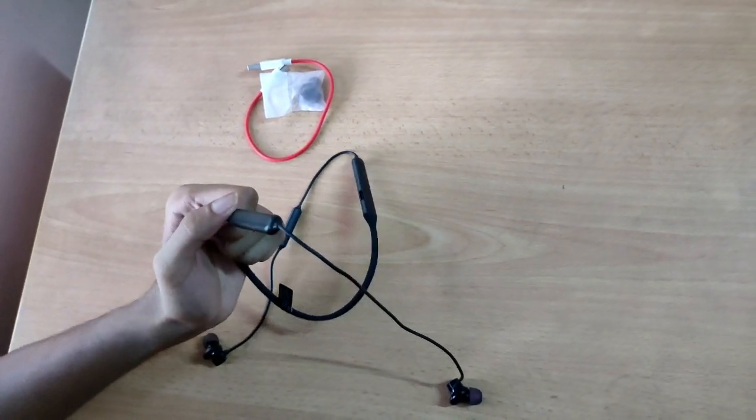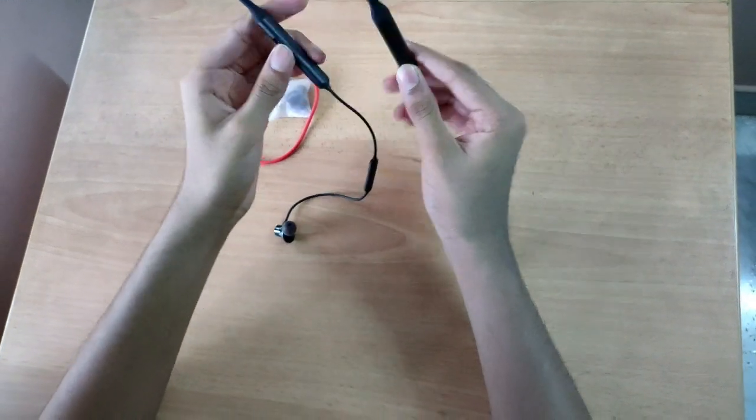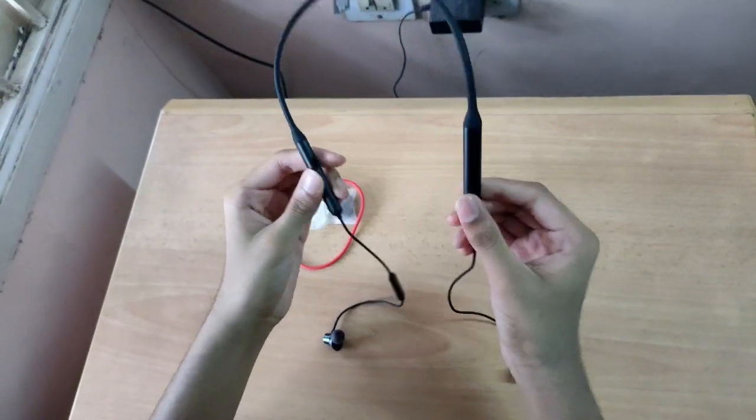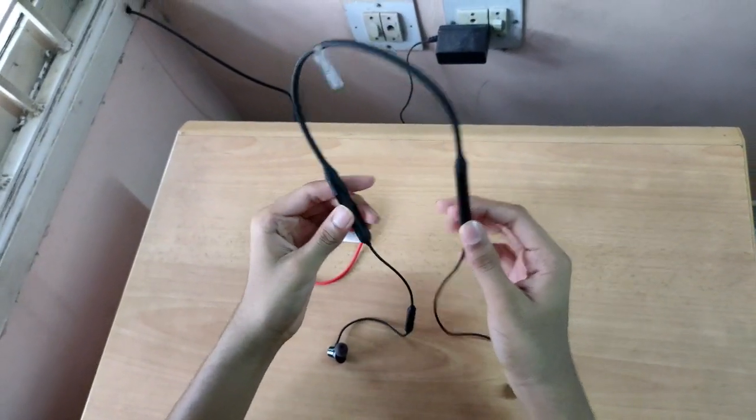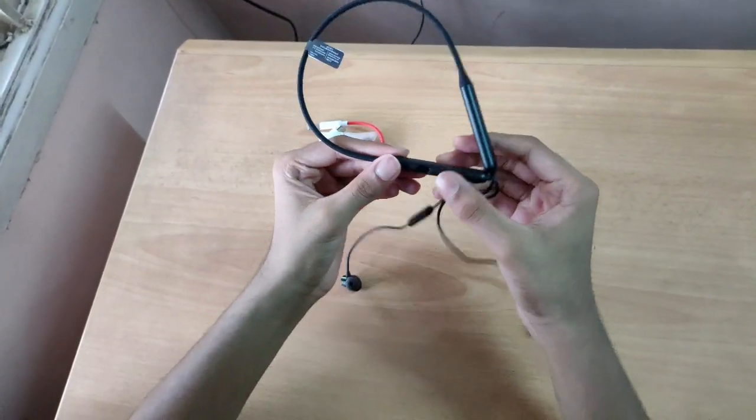This is the overview of the OnePlus Wireless Z. The design is pretty similar to the OnePlus Wireless 2, and I'll explain some of the functions.